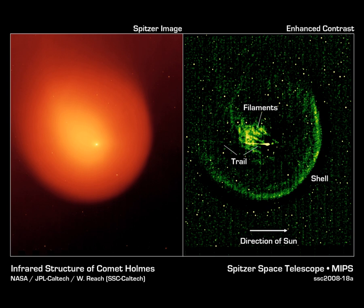Comas typically grow in size as comets approach the Sun, and they can be as large as the diameter of Jupiter, even though the density is very low.